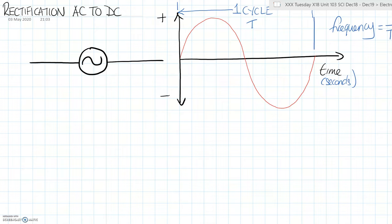In this video we're going to look at rectification, starting with the half wave rectifier. An alternating current supply has a sinusoidal waveform — one revolution of an alternator produces a sine wave. One revolution is known as one time period T, and to work out the frequency, the frequency is how many cycles per second, which is simply one over T.